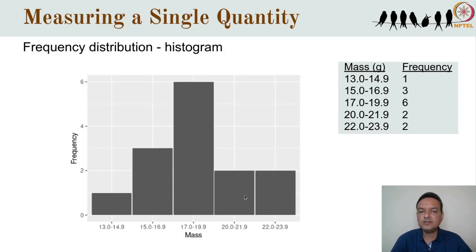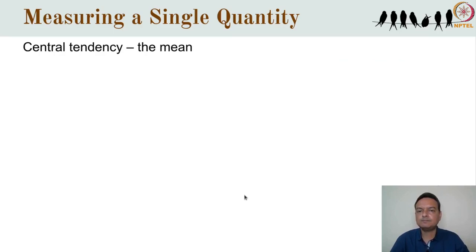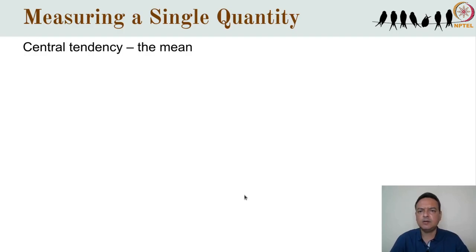Two immediate impressions we get from a histogram are what the typical values are and what the span of the data is. The first is referred to in statistics as the central tendency and the second is the variation. Very often what we are trying to estimate about a population from our sample is the population's central tendency. The best known such measure is the mean or average.